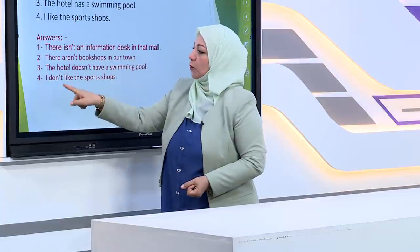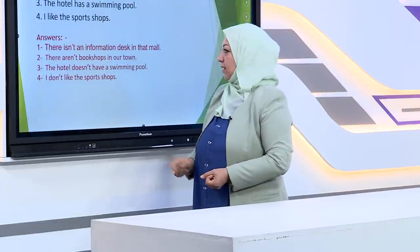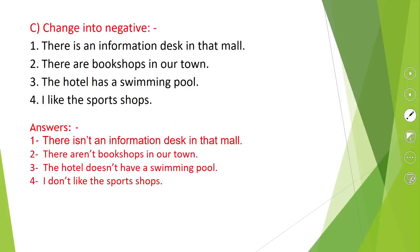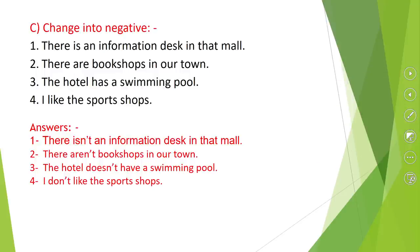I like becomes I don't like. To summarize: 'is' → isn't; 'are' → are not / aren't; 'has' (main verb) → doesn't have; bare verb like 'like' → don't like. We have different kinds of sentence changes, and we change them into negative.